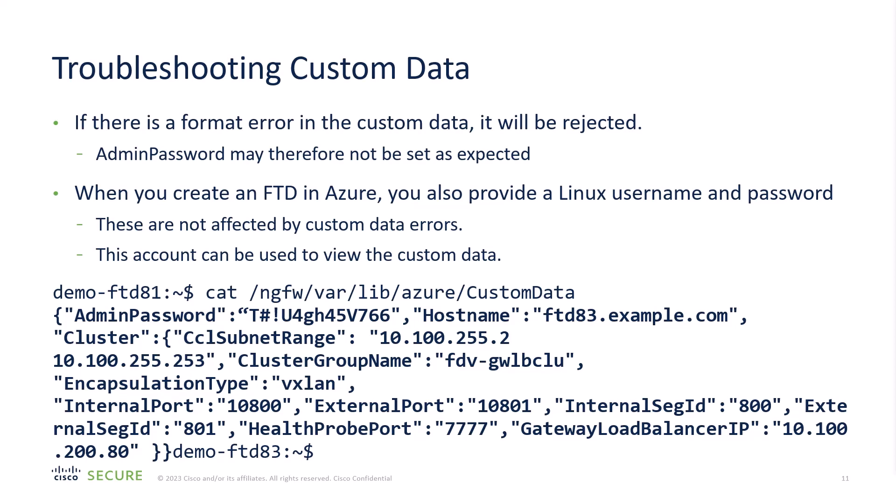One of the challenges is that the custom data includes the admin password. So if the custom data is corrupted, it won't be deployed and you won't be able to log in as admin. However, in Azure, the FTD always has a separate Linux login — you will see this when you deploy an ARM template — and this login is not connected to the custom data. Therefore, you can log in as that user with the password you configured and view the custom data. We show you the path to the file, and once you find your error, you could fix your ARM template and redeploy.